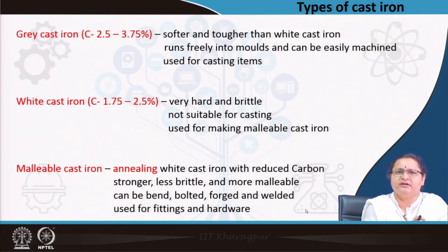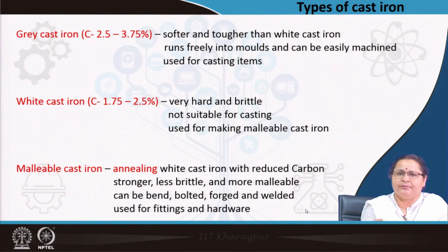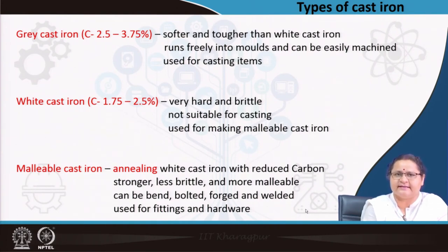There are three types of cast iron: gray cast iron contains more carbon, white cast iron has lesser carbon, and malleable cast iron has even less carbon. Malleable cast iron can be pulled out or rolled out — it is less brittle and resembles wrought iron more closely.